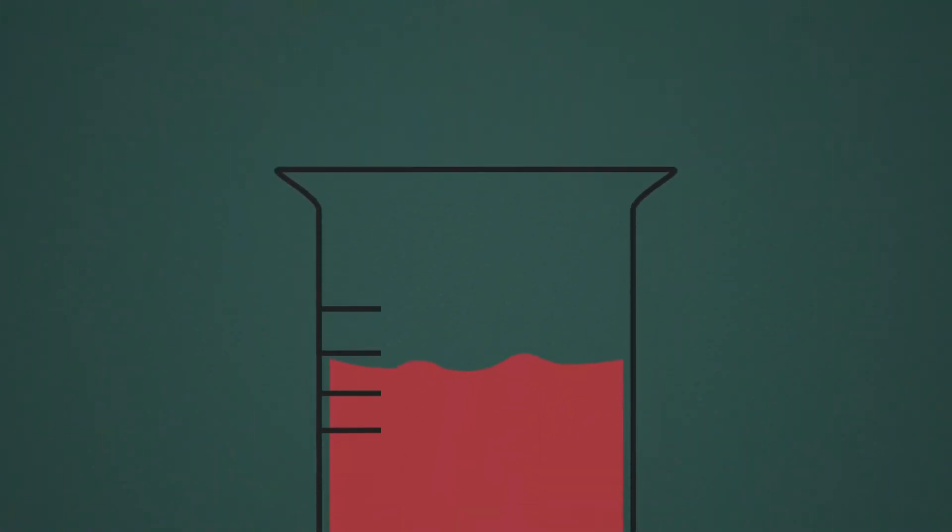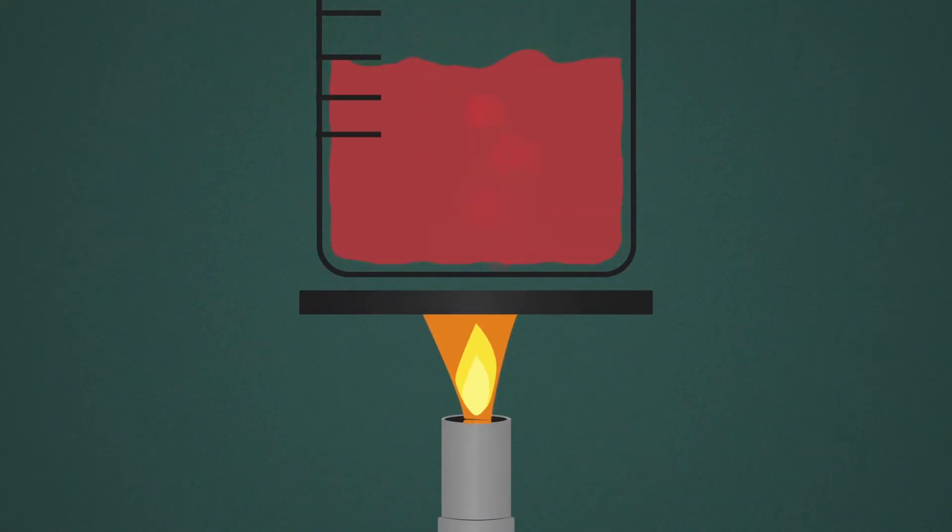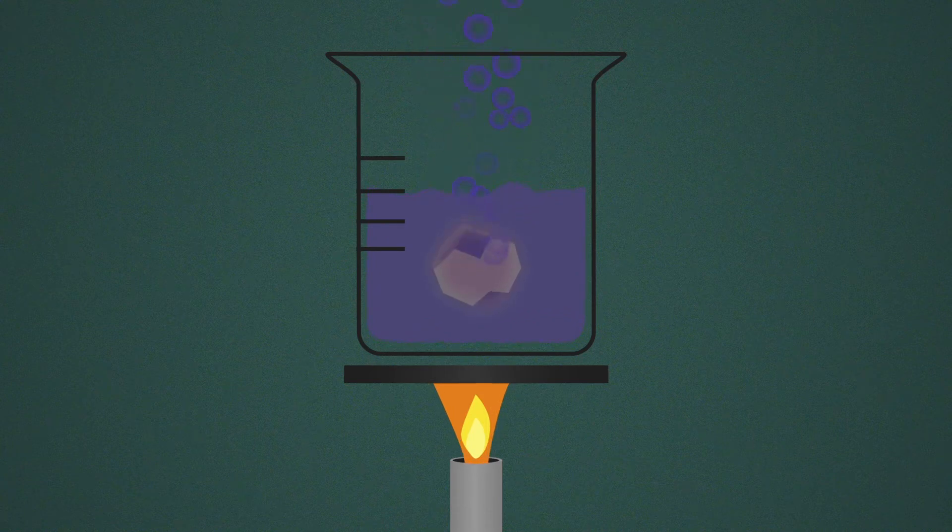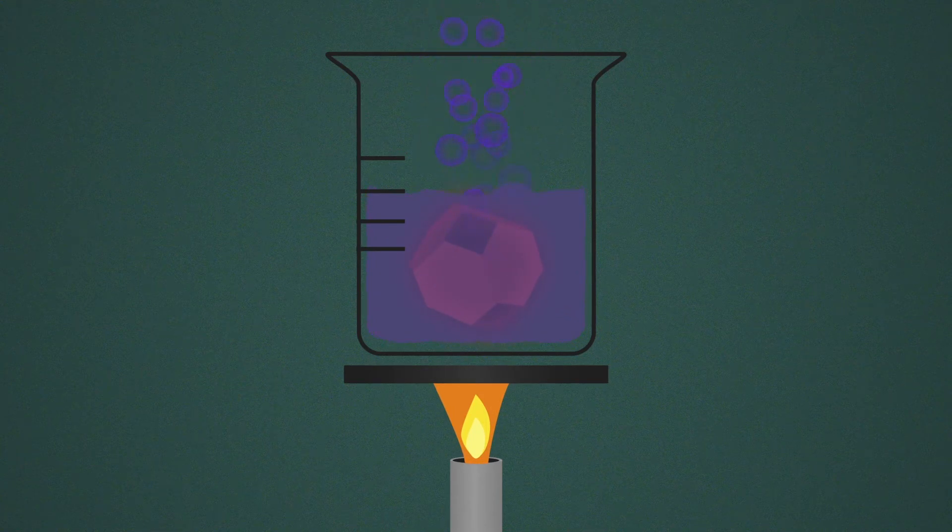A simple method for making quantum dots uses heat to control crystal growth. A beaker of solution is heated and a second reactant is added. The crystals keep growing as long as the mixture is hot.